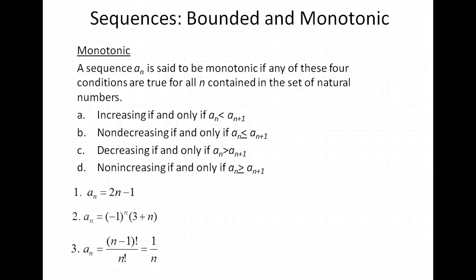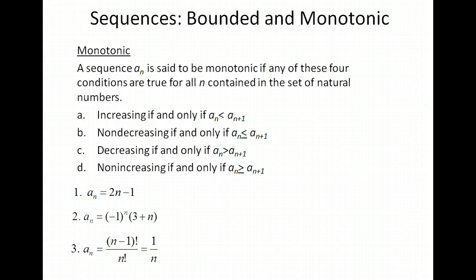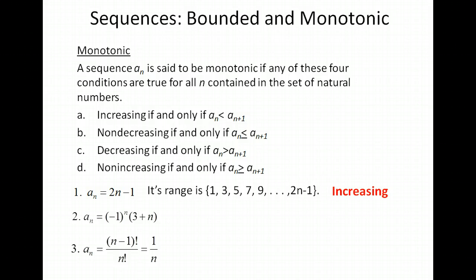Let's talk about monotonic sequences. Monotonic means that the range values are either always going up or always going down — or they could be staying steady and then increasing, or staying steady and then decreasing, which we call non-decreasing and non-increasing. If any of those four conditions are true, the sequence is monotonic. Looking at 2n minus 1, the range values are always going up — each number is less than the next — so this is strictly increasing, and therefore monotonic.